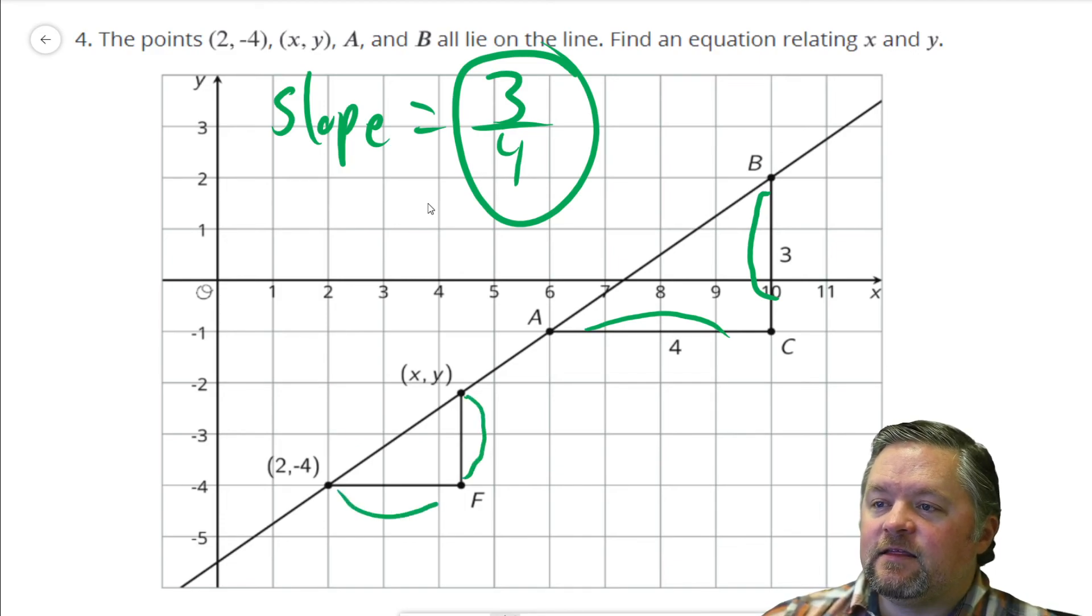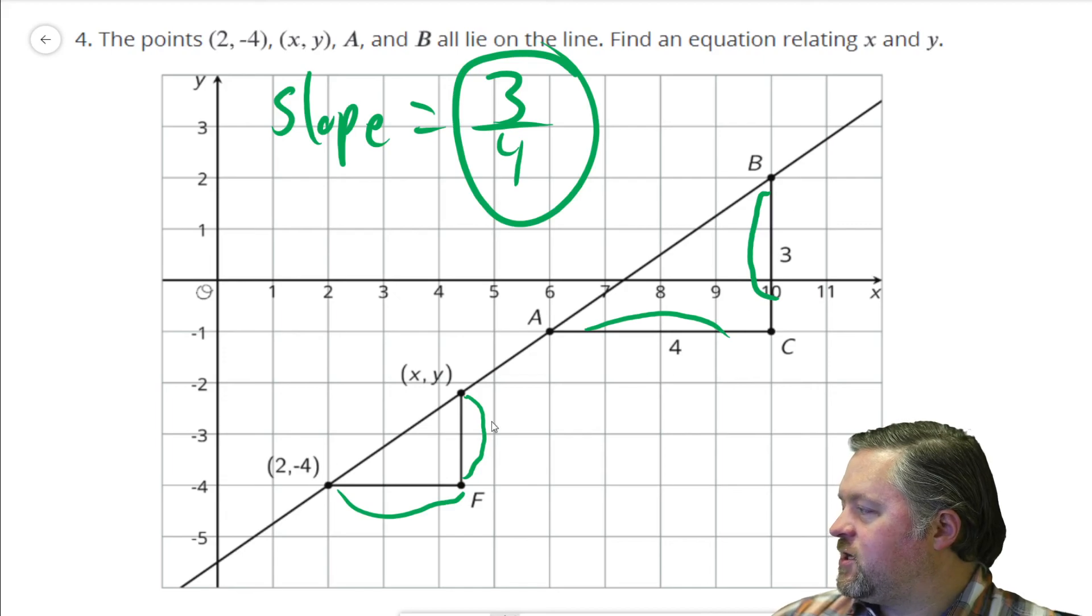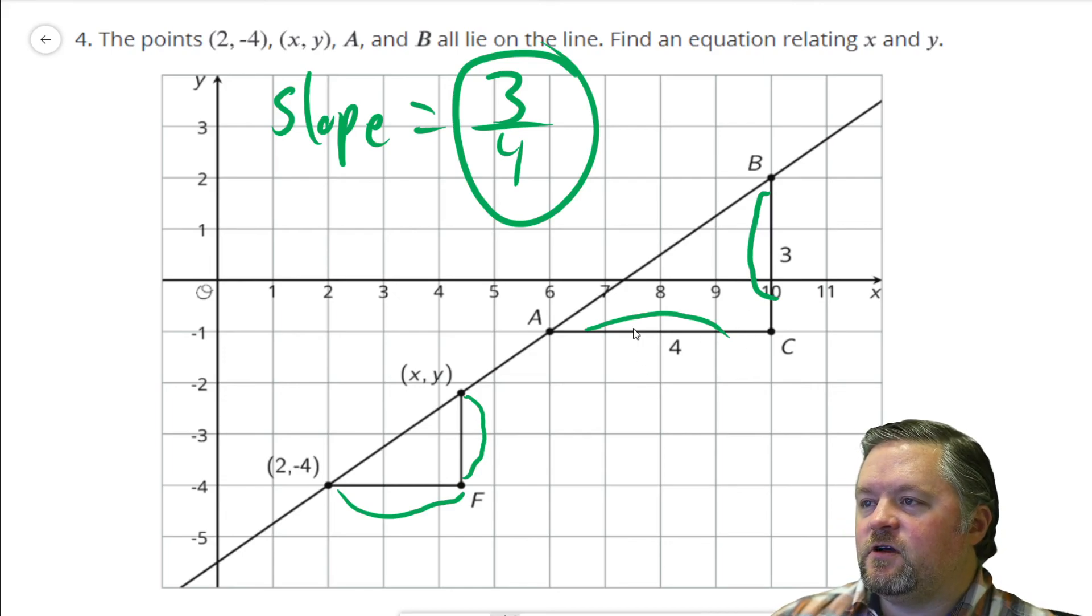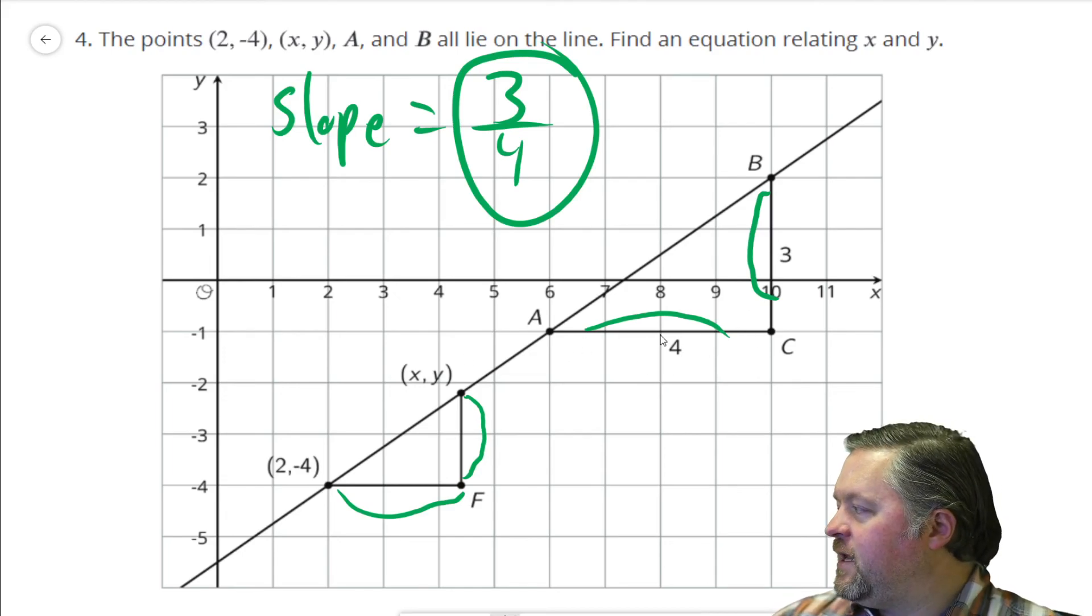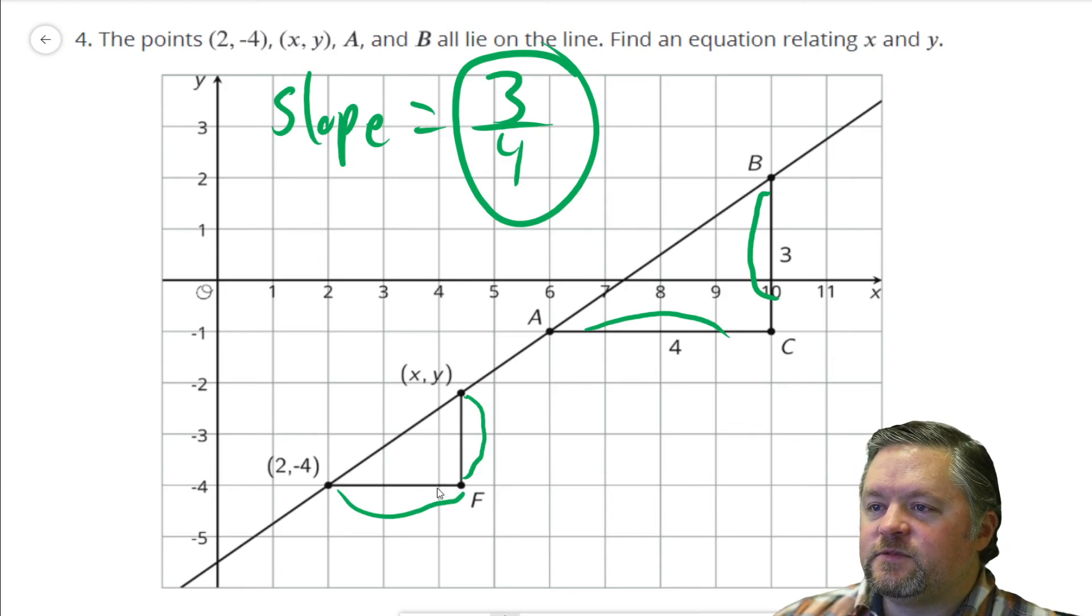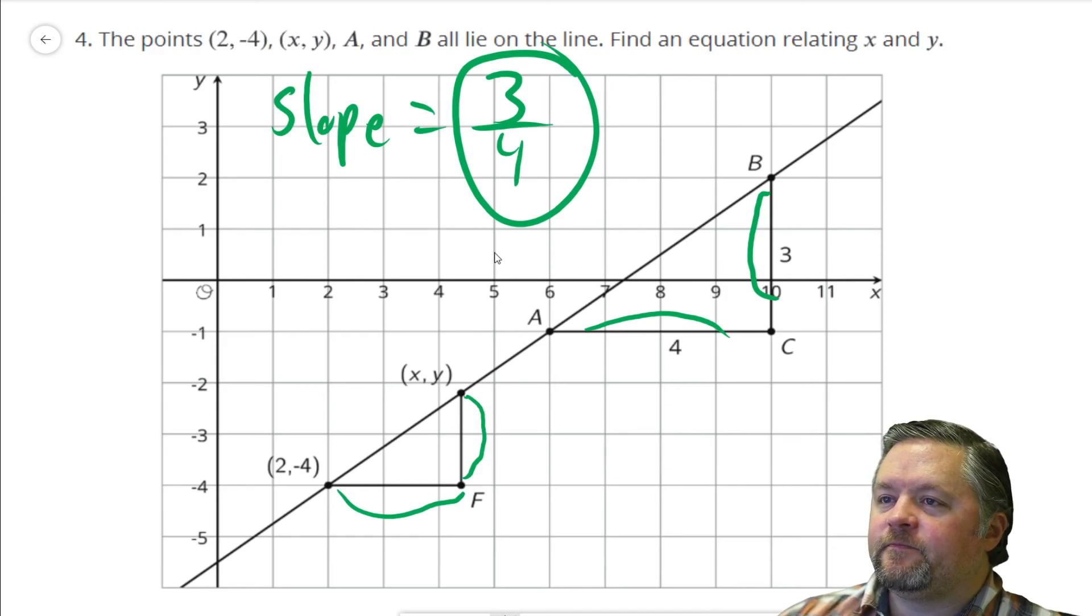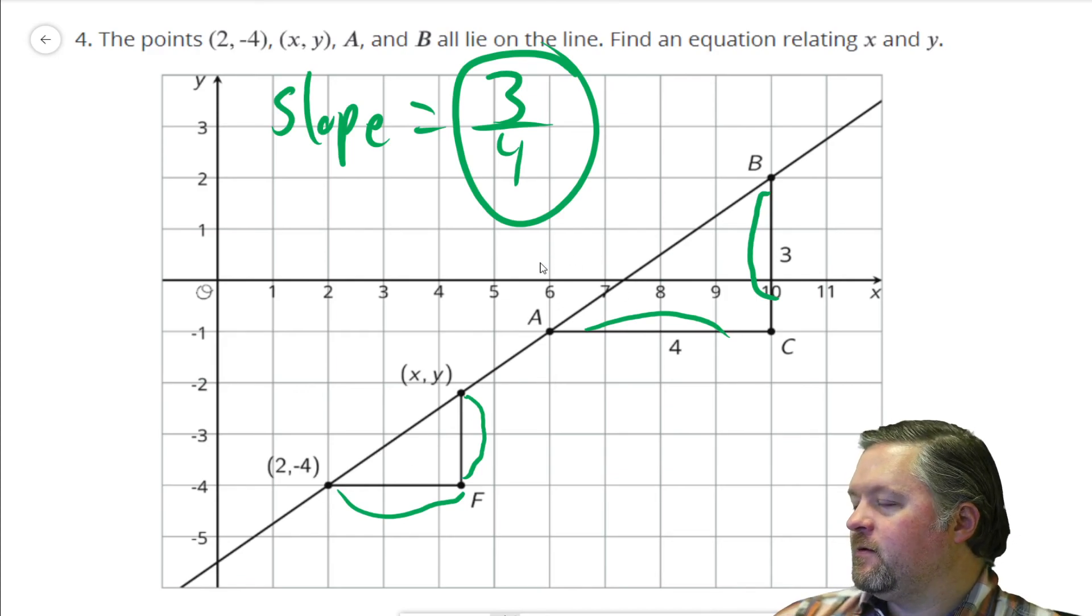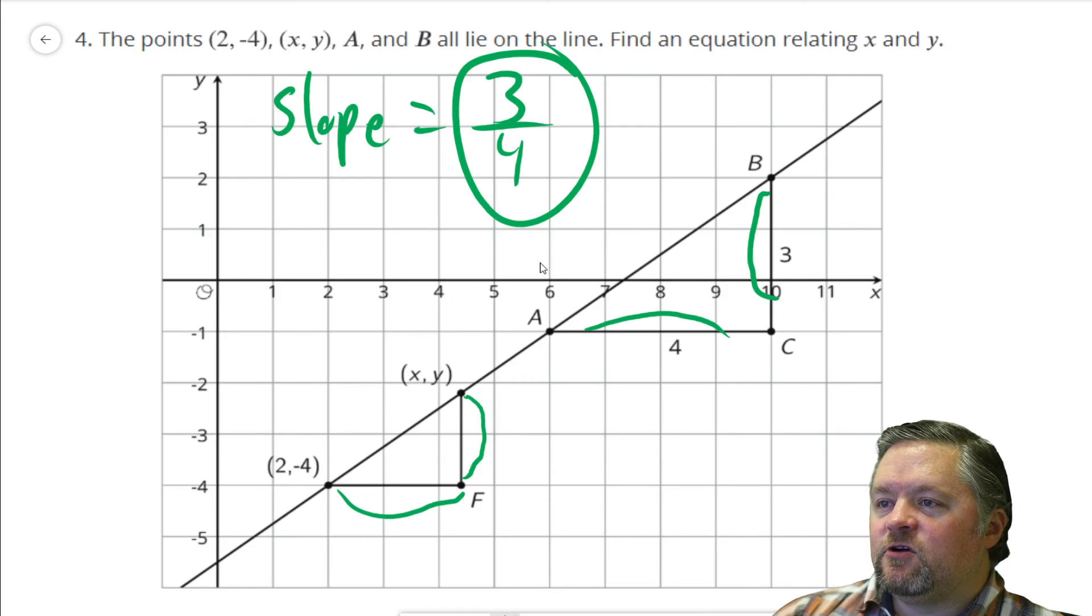That has to equal, because this and this are short side short, this is the short side of this triangle, this is the short side of this triangle, medium side of that triangle, medium side of that triangle, these have to be similar to each other. So equivalent ratio of side lengths 3 over 4, which is this one, has to equal...